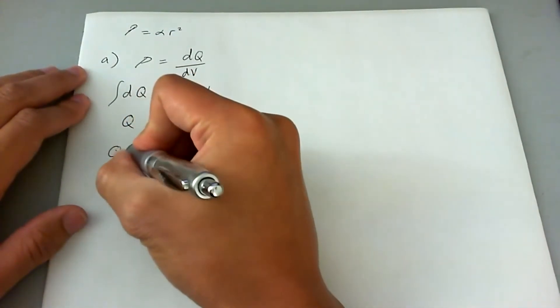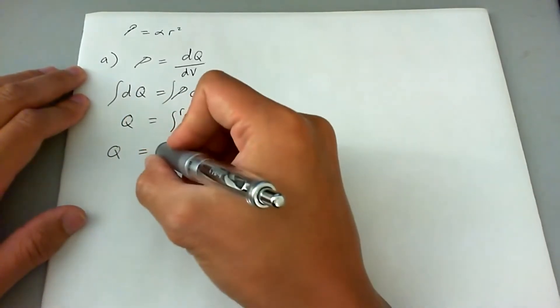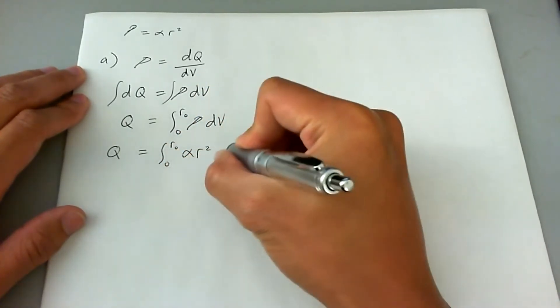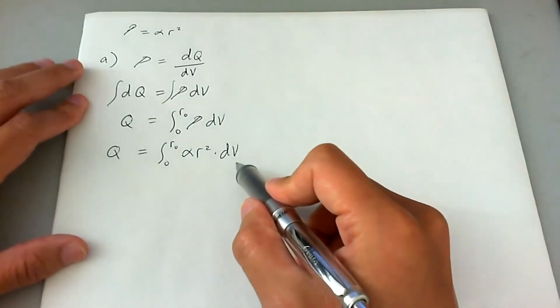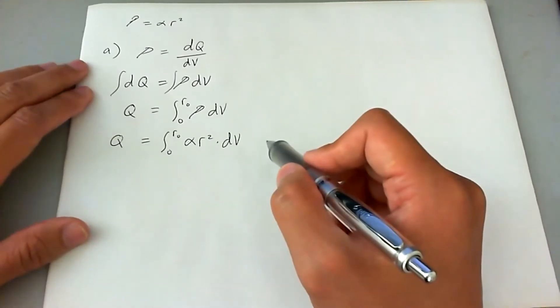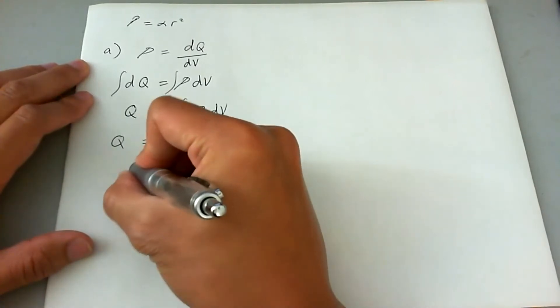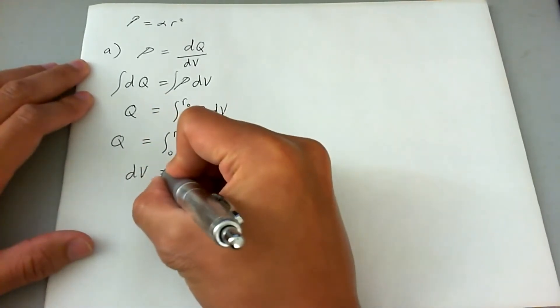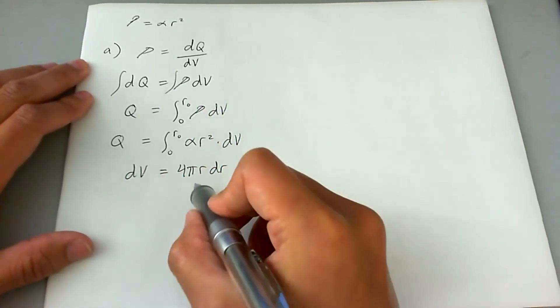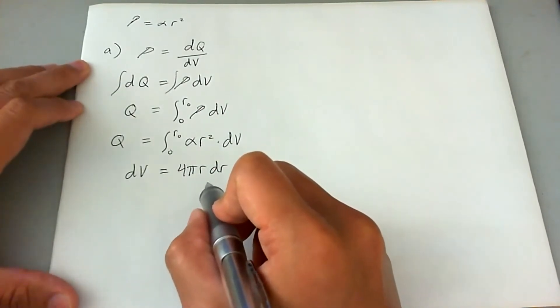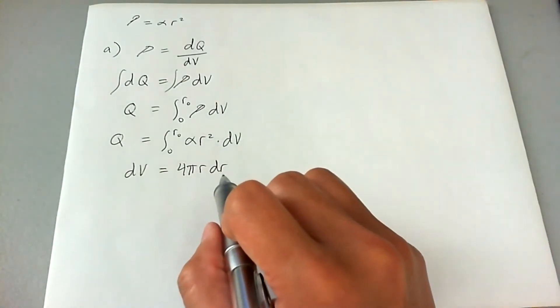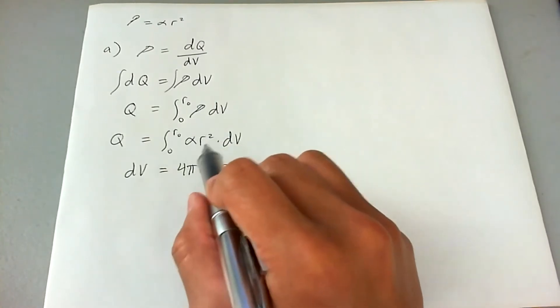So Q total, to be implied its total, is equal to the integral from zero to R naught of alpha R squared DV. Now the problem is DV is not in terms of R, which is what we want. Now, looking back into your calculus, a sphere DV is going to equal to 4 pi R dr. Now this is for a sphere whose components are symmetrical in the angle field and only varies in the R field.